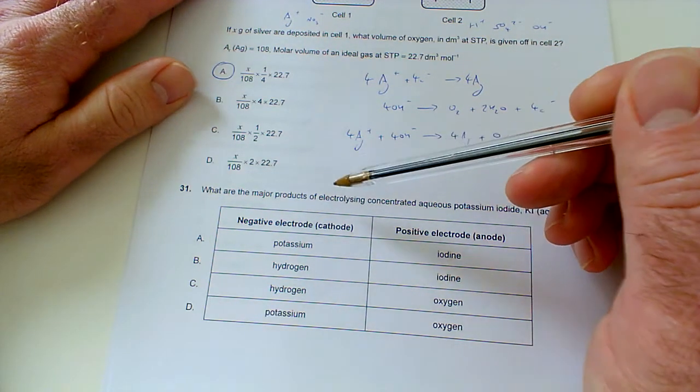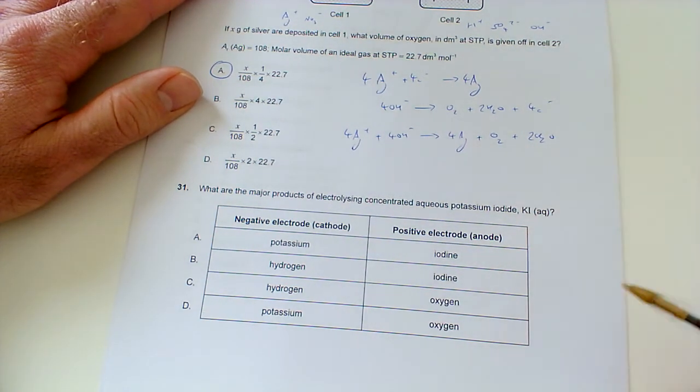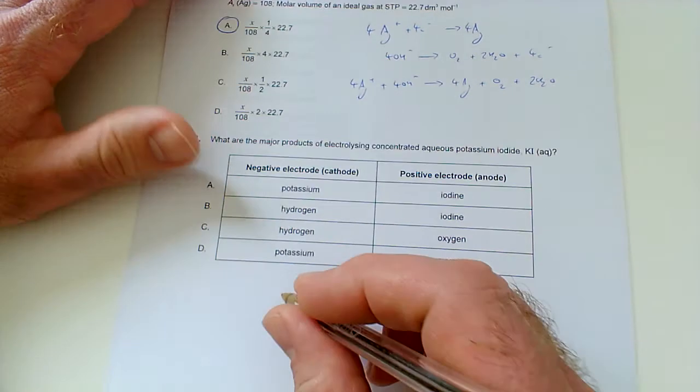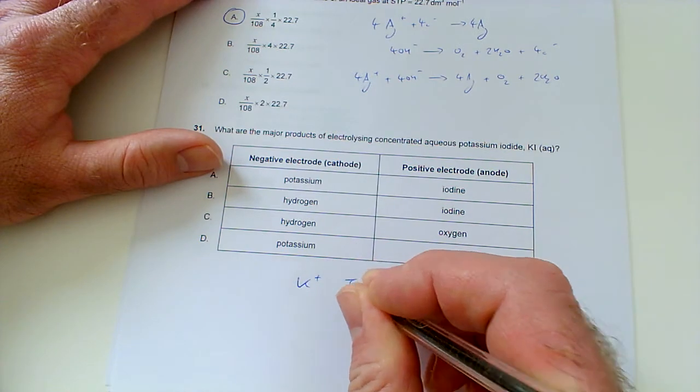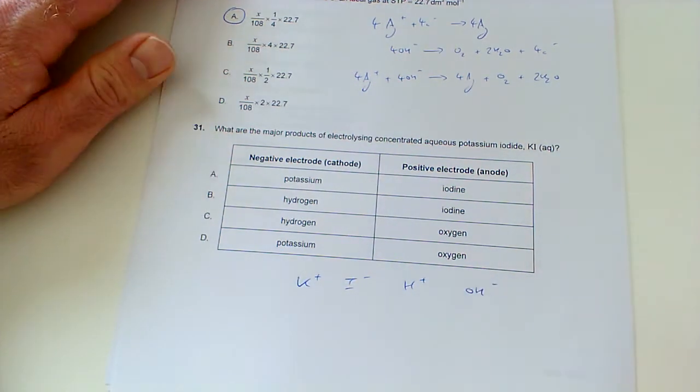Question 31. What are the major products of electrolyzing concentrated aqueous potassium iodide? Well, what have we got as ions present? We've got K+, we've got I- and it's in water, so we've also got H+, and OH-.